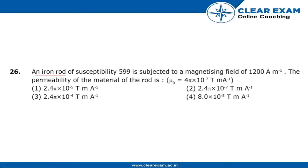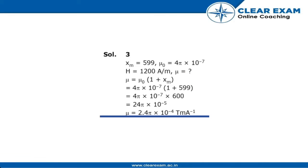An iron rod of susceptibility 599 is subjected to a magnetizing field of 1200 ampere per meter. We have to find the permeability of the material of the rod. Mu0 is given as 4 pi into 10 to the power minus 7, xm is given as 599, and H is given as 1200 ampere per meter.